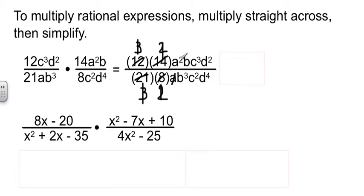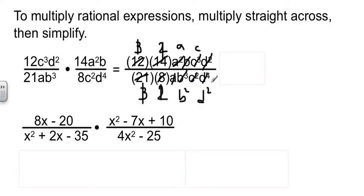Cleaning up the variables: one a comes out of two a's leaving one a; one b comes out of three b's leaving two b's; two c's come out of three c's leaving one c; two d's come out of four d's leaving two d's. When we clean everything out, we're left with ac on top and b squared d squared on the bottom.